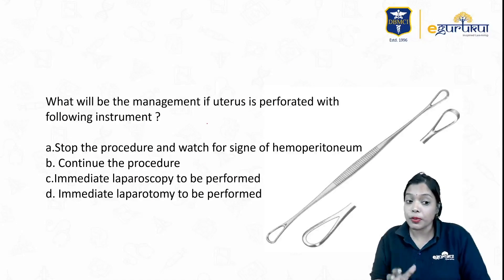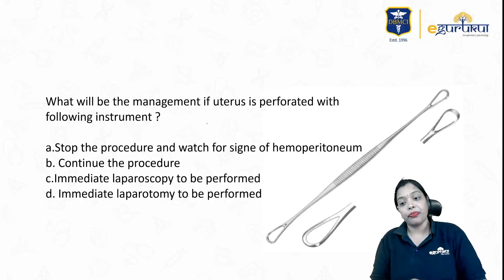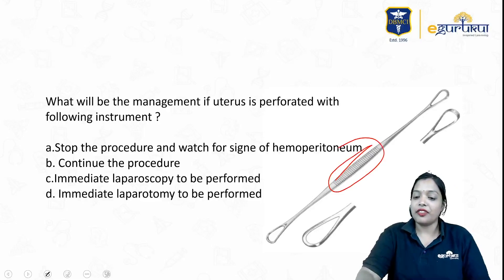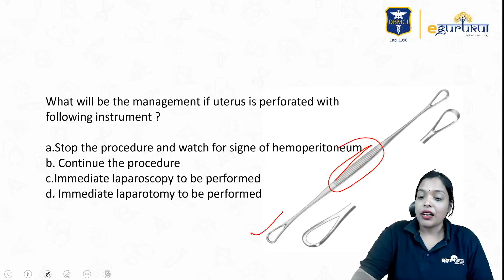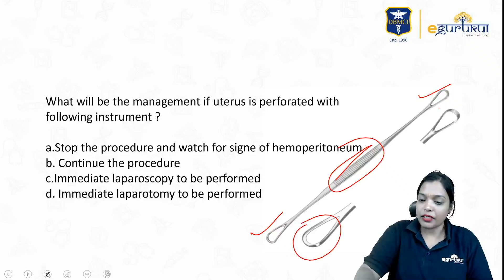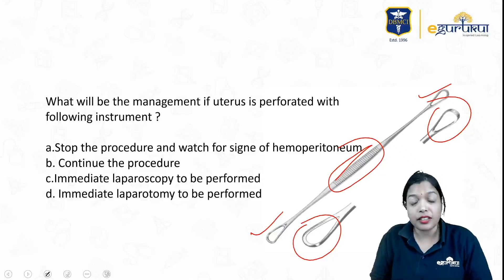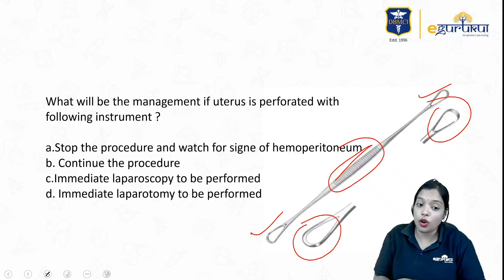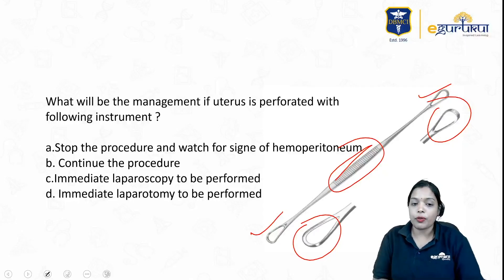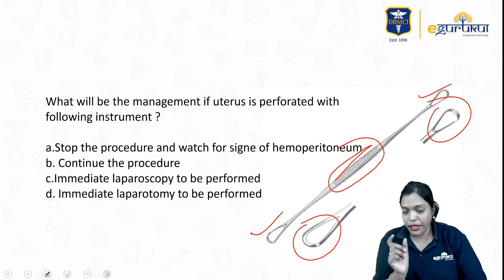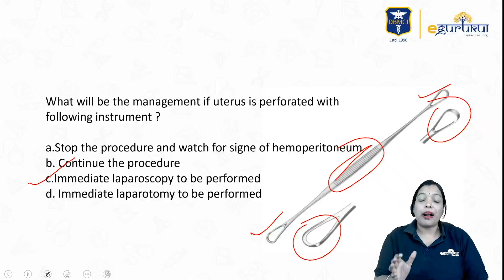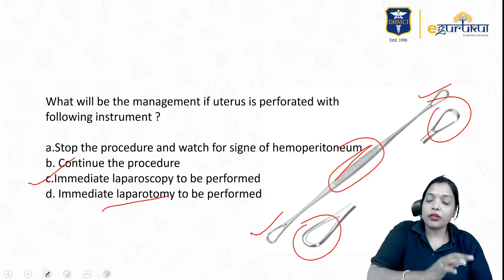What is the management if the uterus is perforated with this instrument? This is a uterine curette. It has serrations in the center for better grip, one sharp end and one blunt end. The sharp end is used for gynecological curettages; the blunt end for OBG dilatation and curettages. When the uterus is perforated, you stop the procedure, watch for signs of hemoperitoneum, then do immediate laparoscopy. If there is hemoperitoneum and the patient is hemodynamically unstable, go for laparotomy.